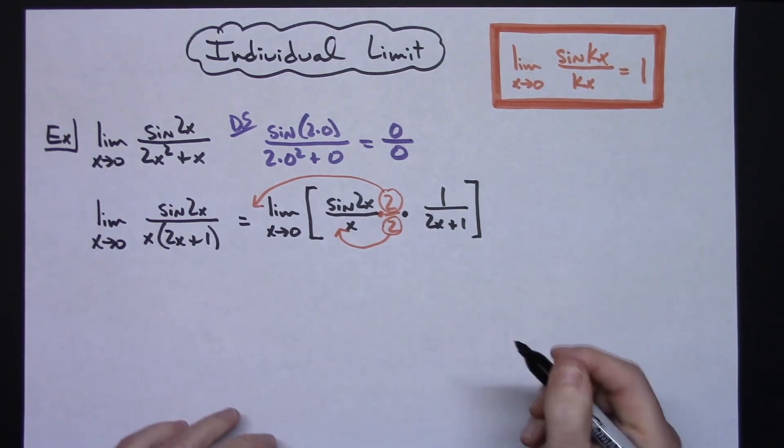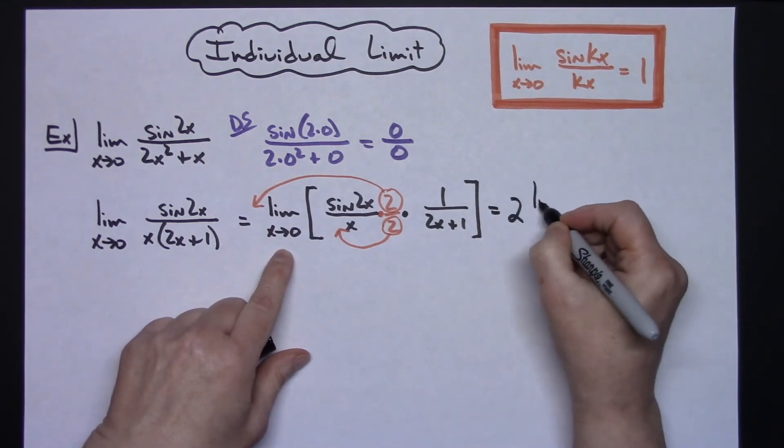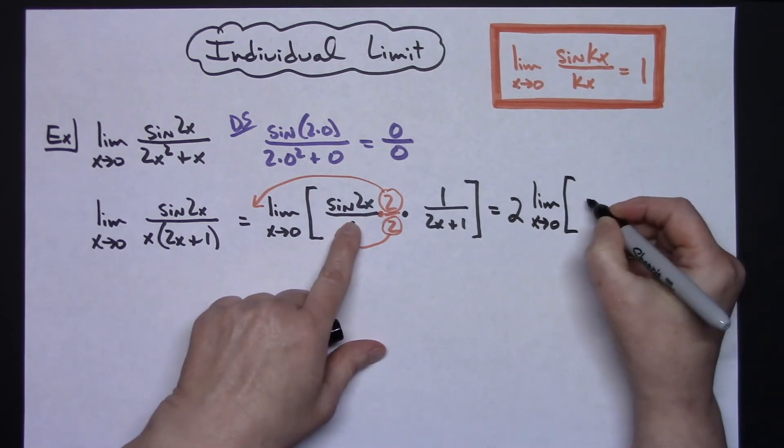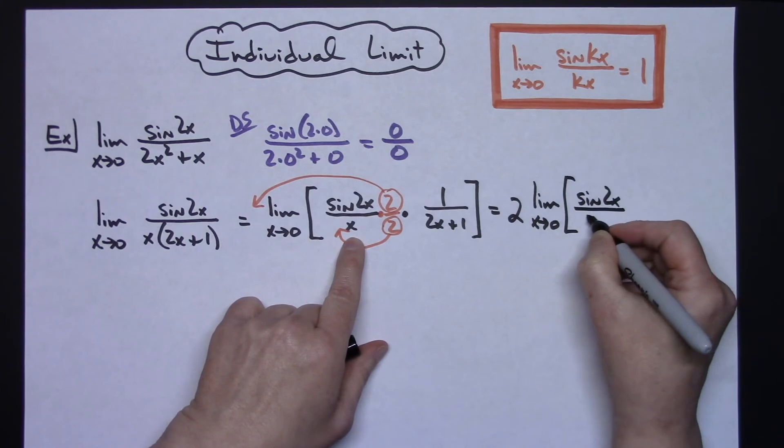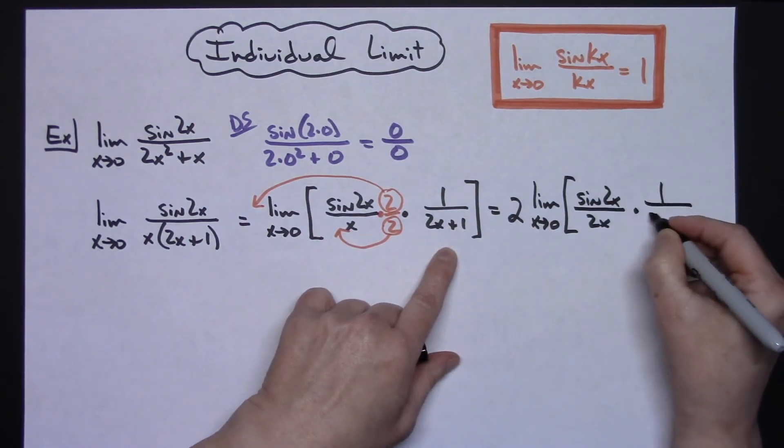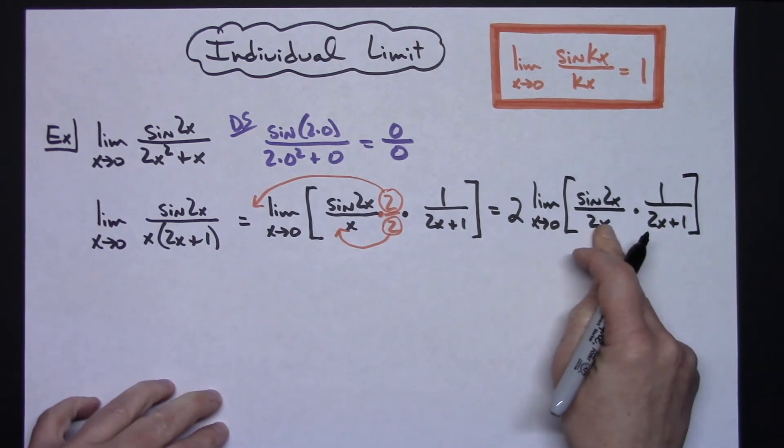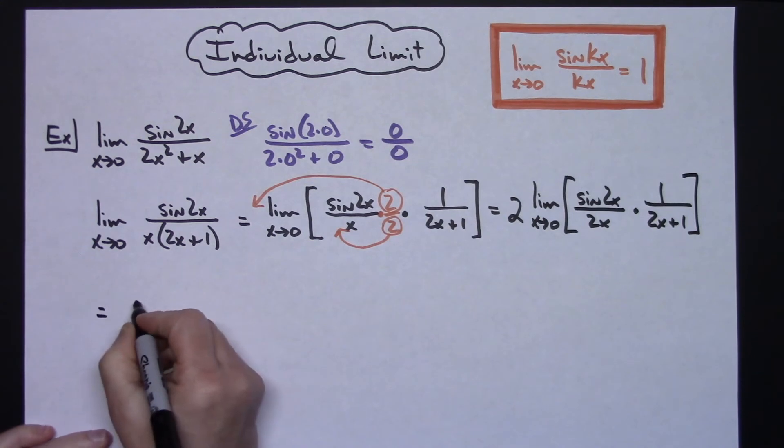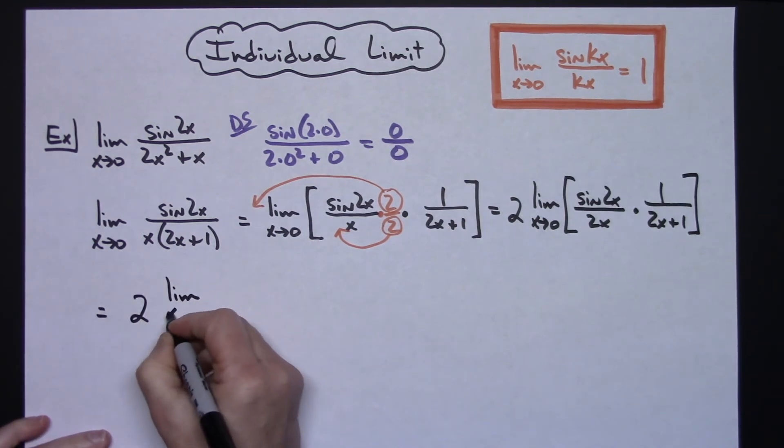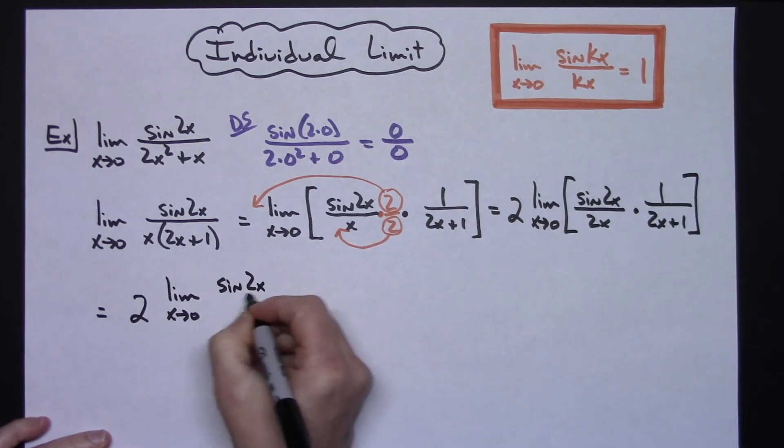I can now take the limit of each one of those individually. So I would have 2 times the limit as x approaches 0 of the sine of 2x over 2x times the limit as x approaches 0 of 1 over 2x plus 1.